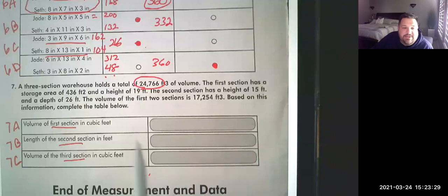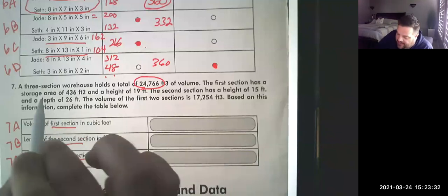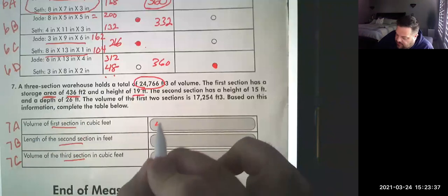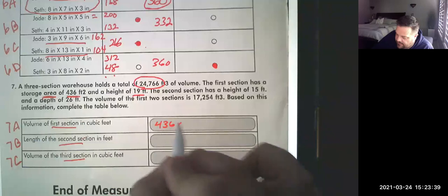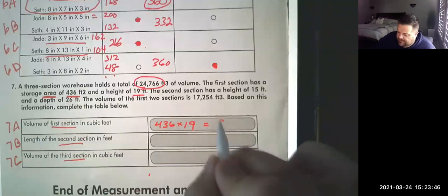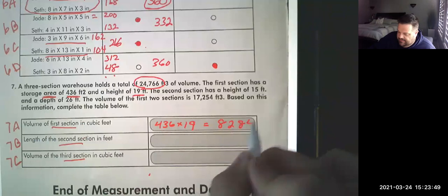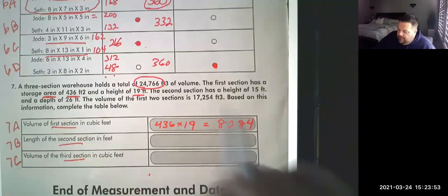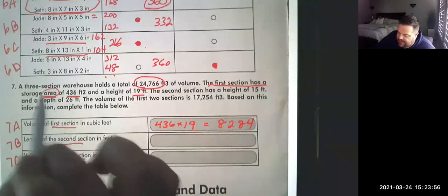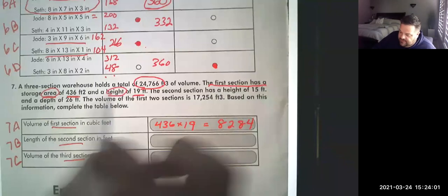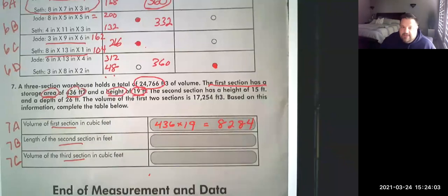The first section has a storage area of 436 area. That means they're giving you the length and the width, right? And a height of 19. So you're just multiplying that to find the volume of section one, right? And that would give you an answer of 8,284 if you multiplied those together. So look, first section, you've got to know that the area is the length and width in your volume formula, and then they give you the height. So you're just multiplying these two together to get the first level.